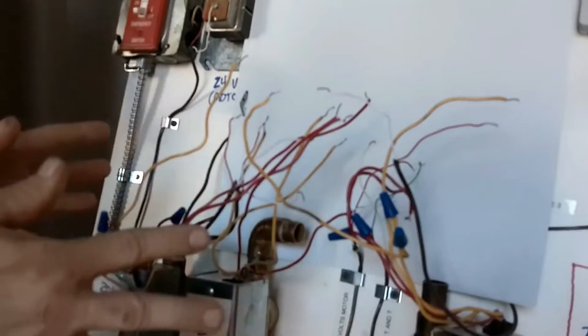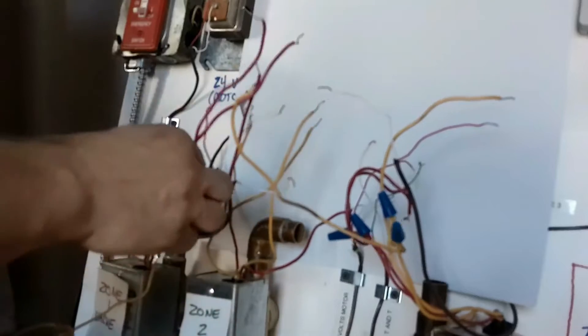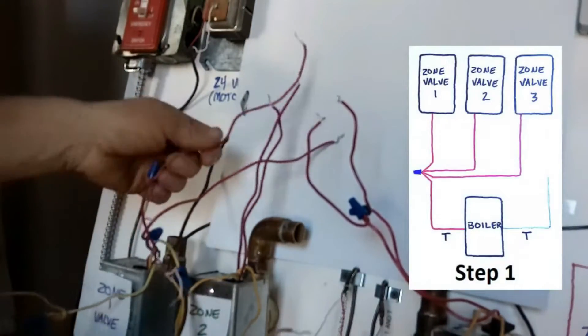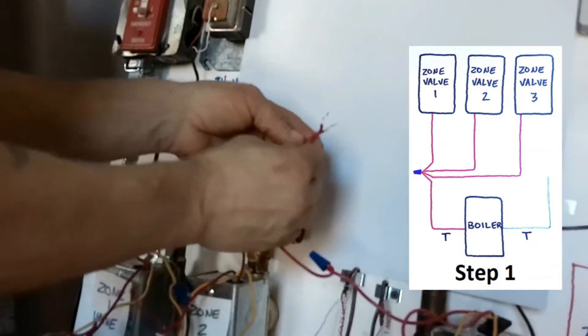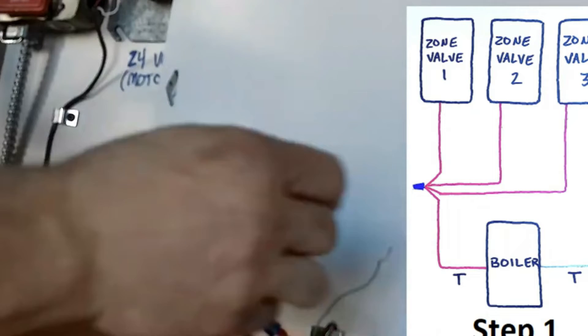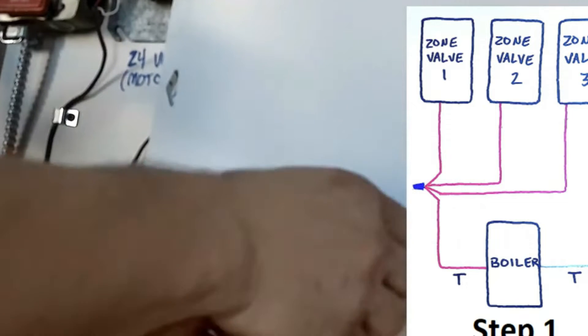Step one in figuring out the chaos is to separate all the red wires from your zone valves from everything else. We got just the red wires from our zone valves. We're going to take one red wire from each zone valve and connect those all together. Then we're going to take one of our TNT wires and connect it along with these red wires.